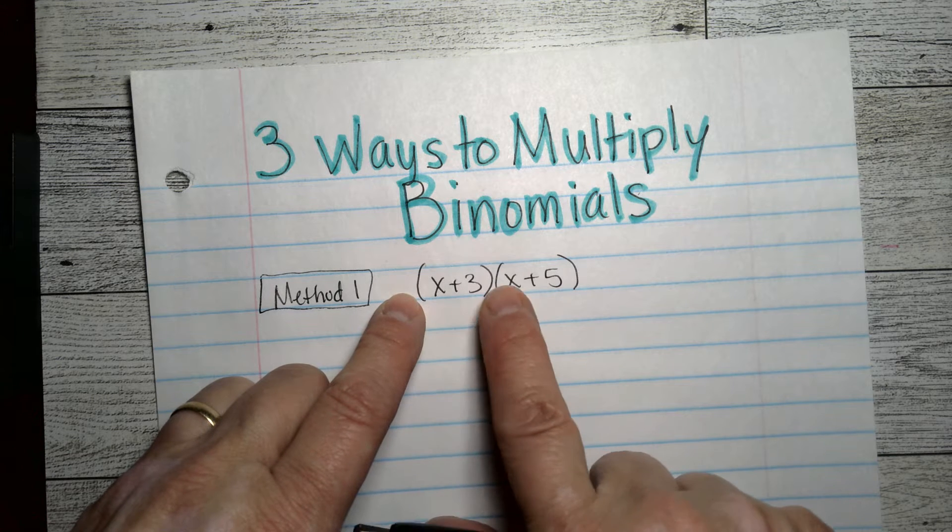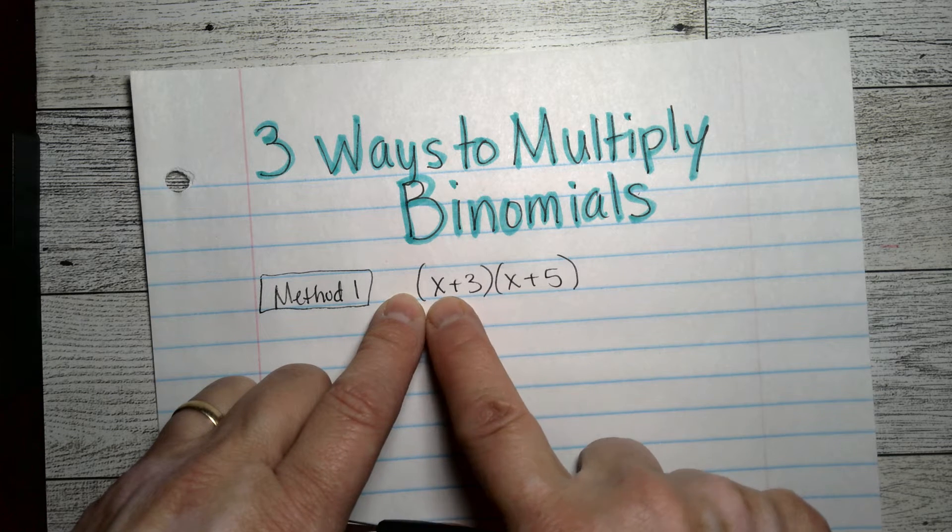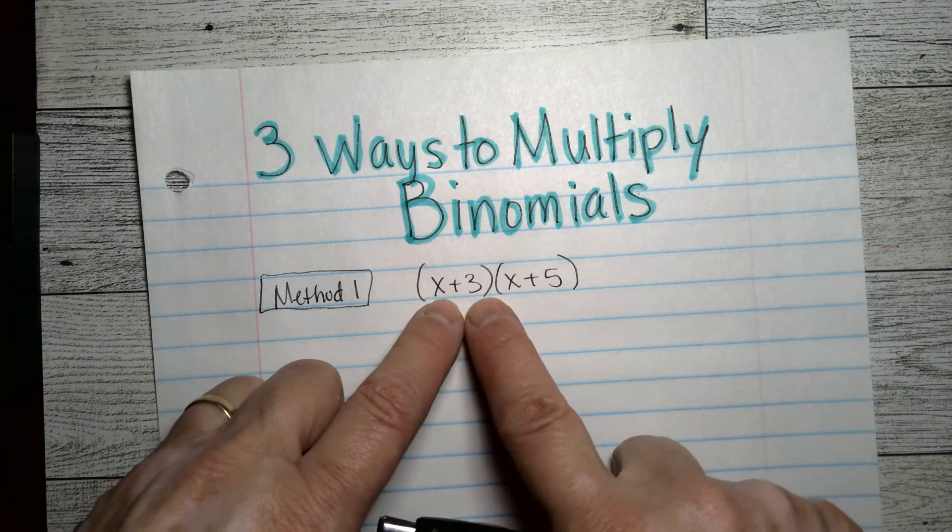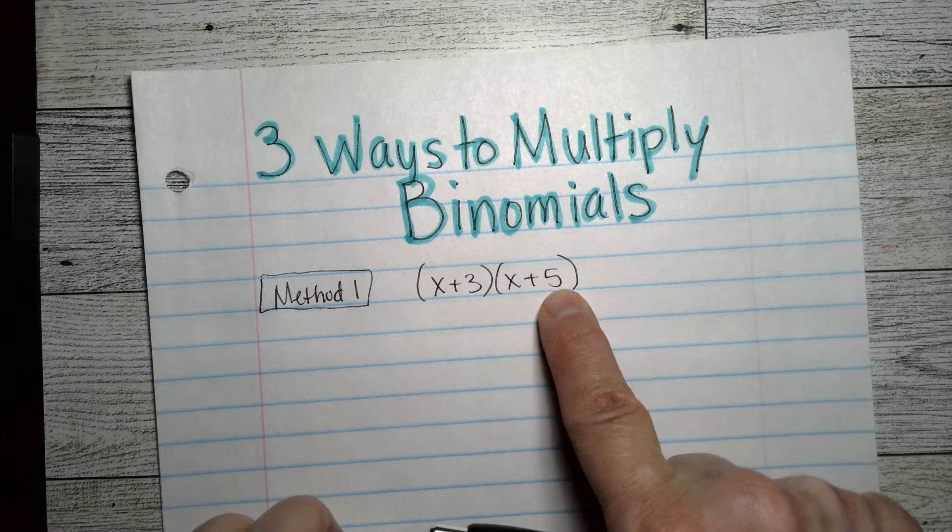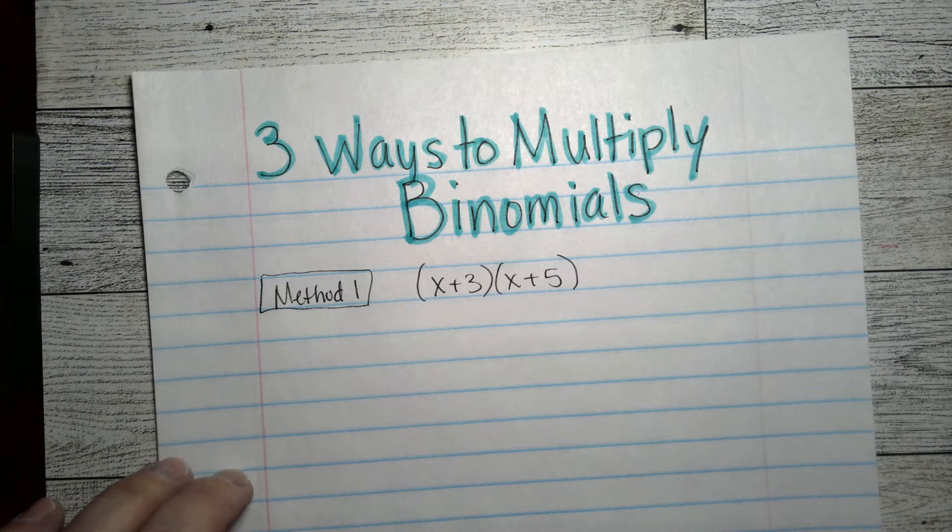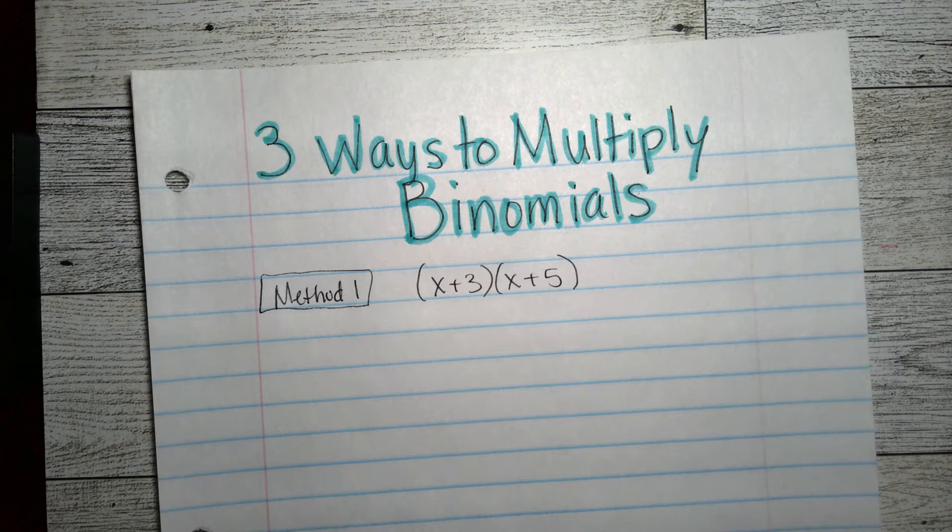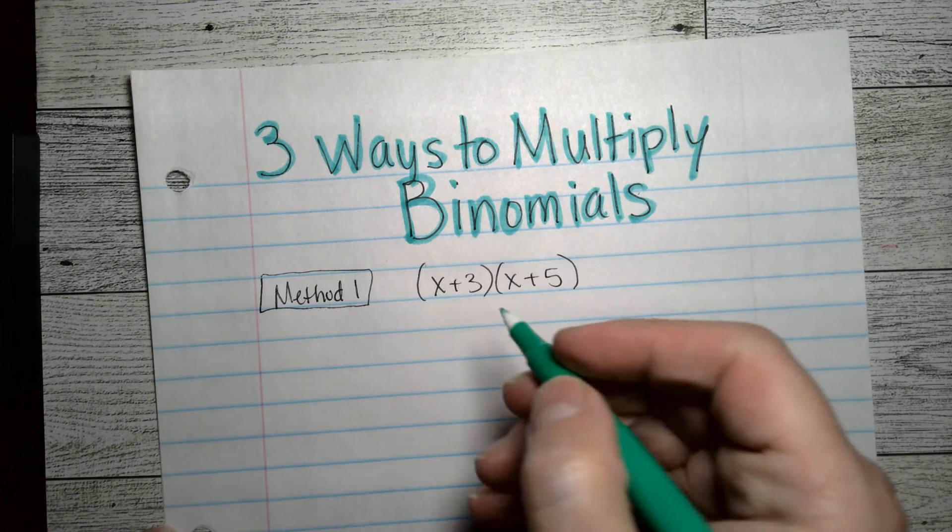So this x needs to be multiplied times this x and this x times that five. Three needs to be multiplied times that x and three needs to be multiplied times that five. So we're going to just start by doing that. And sometimes this is called the FOIL method. It's the same thing, this distributive property method.